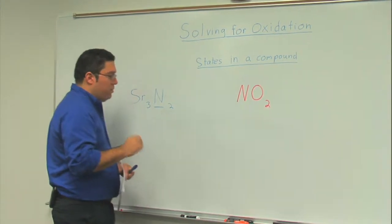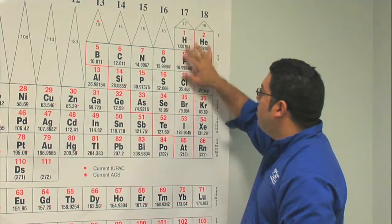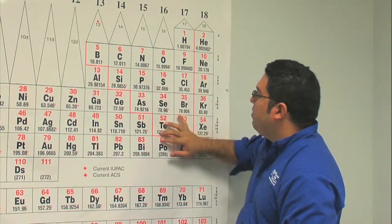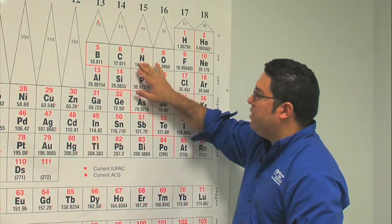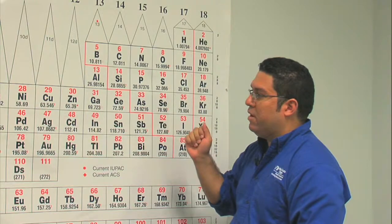I can go over to the periodic table and figure out the charges. Nitrogen is right here. If you recall the way the charges worked - this column is zero, this one is negative one, negative two, and then negative three. So nitrogen has a charge of negative three, which means it's gaining three electrons.